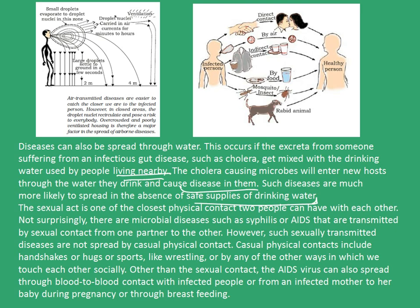The sexual act is one of the closest physical contacts two people can have. There are microbial diseases such as syphilis or AIDS that are transmitted by sexual contact from one partner to the other. However, sexually transmitted diseases are not spread by casual physical contact such as handshakes, hugs, or sports like wrestling. Other than sexual contact, the AIDS virus can also spread through blood-to-blood contact with an infected person, from an infected mother to the baby during pregnancy, or through breastfeeding.